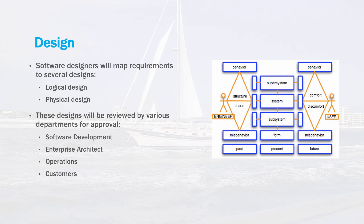Once the requirements specification has been completed, the project will move into the design phase. In this phase, designers will map specific requirements into designs. These designs will include both logical models and physical models. The logical model will determine the groupings of software components necessary to meet basic requirements. Physical designs will include hardware elements necessary to host the software, such as the number of concurrent users, the availability of the system, and the types of usage scenarios. The physical designs will include server topology, network components, any mobile devices required, and perhaps desktop computers as well. The goal of the design phase is to provide developers all the information they'll need to develop code to meet the basic requirements of the system.